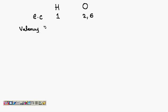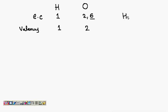The valency of hydrogen is 1. The valency of oxygen — there are six electrons in the second orbit, it needs two more electrons to make eight, that is the octet state — so the valency of oxygen is 2, as it requires two more electrons.